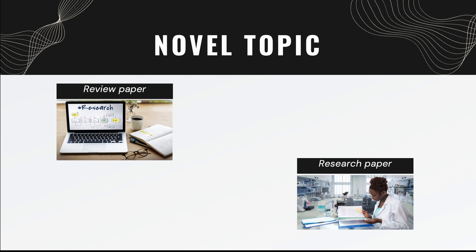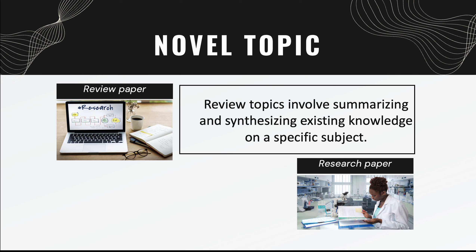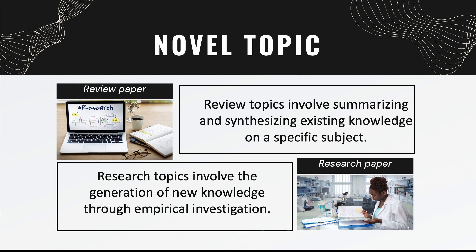Based on the papers, the topic can be divided into two different things. First, the review topic or research topic. For the review paper, you have to find a novel topic, which involves summarizing and synthesizing existing knowledge on a specific subject. The research paper involves the generation of new knowledge through experimental studies or investigation. Today, we try to focus on review papers and how to find a novel topic for a review paper.